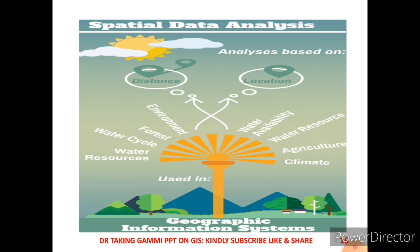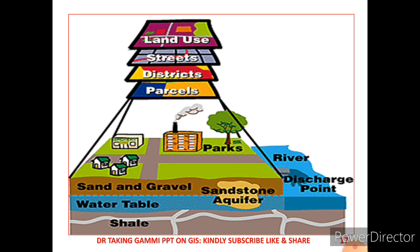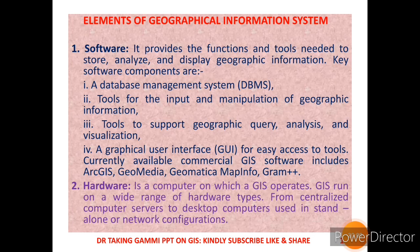Some demo pictures show how GIS helps in climate, land, water in livestock availability, water availability, environment, forests, water cycles, water resources, and land use — all these can be analyzed and recorded in the form of data by GIS. Another set of images shows how with the help of GIS the land use, street, district, forests, parks, plantations, sand, gravel, water table, soil, minerals, and rivers — all these can be analyzed and recorded.